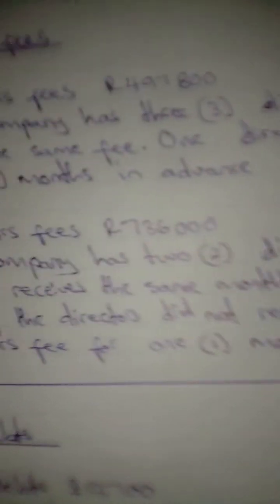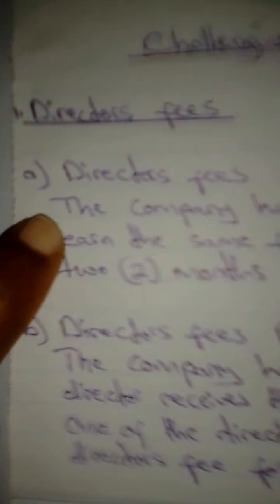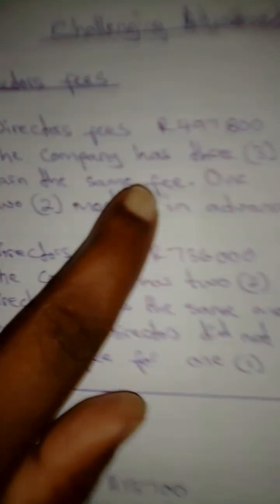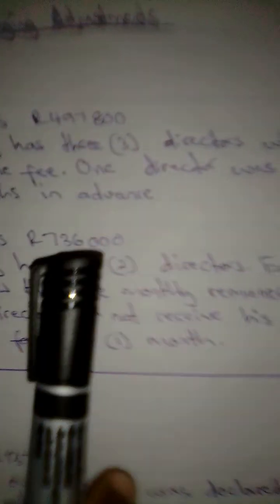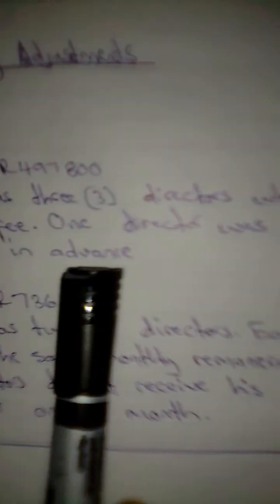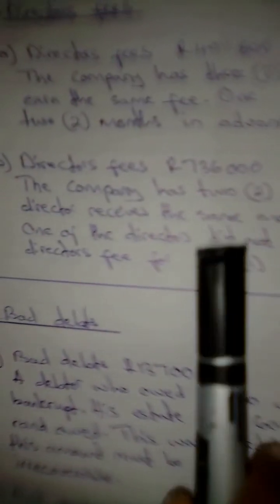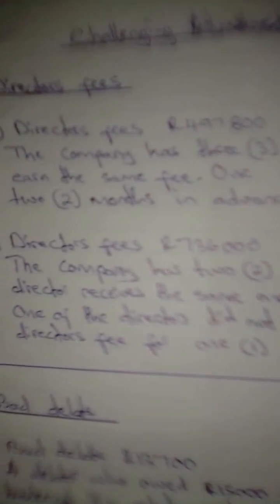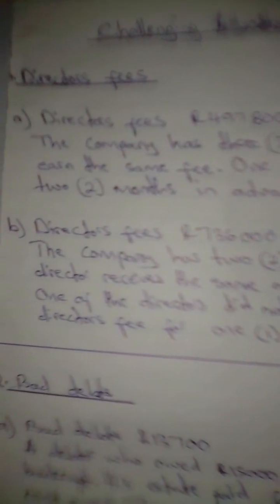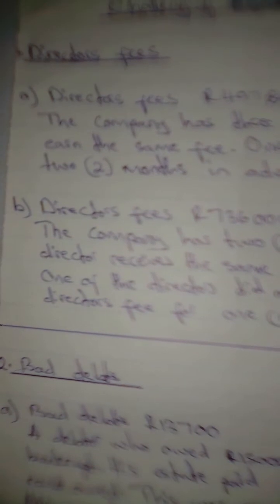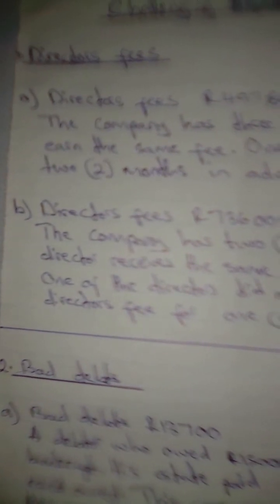So we are going to start with the director's fees on A. Here they are saying that the director's fees that are given is $497,800. The company has three directors who earn the same fee. One director was paid two months in advance. So there is an amount that is in advance that we want. We need to calculate it.